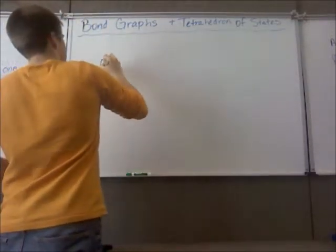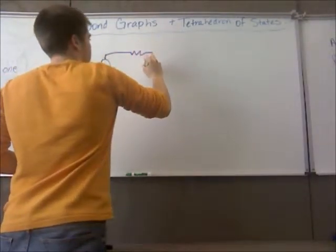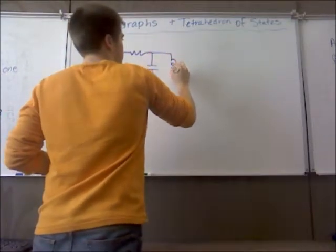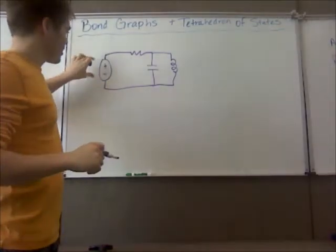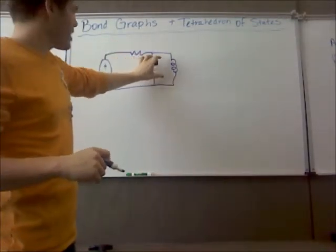So here we've got an electrical system. So all I've drawn so far here is a voltage source, a resistor, a capacitor, and an inductor. So we can label those.